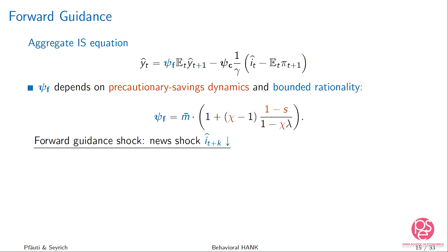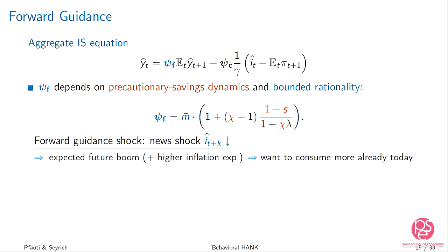This Psi_F matters for how changes in expectations are transmitted to output today, and therefore for how powerful forward guidance is. Consider forward guidance as an announcement today of a one-time interest rate change k periods in the future. Standard consumption smoothing: you expect a boom, expect high inflation, and want to smooth consumption by increasing it already today. The precautionary savings motive actually decreases because unconstrained households, if they become hand-to-mouth in that period, will benefit even more from the future boom. However, with cognitive discounting, you discount both effects.